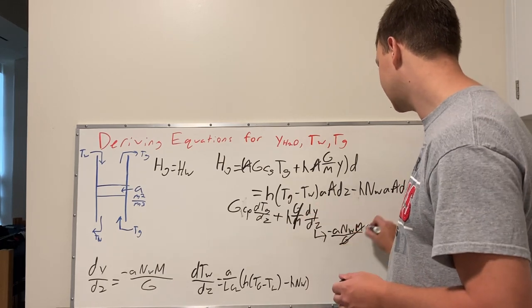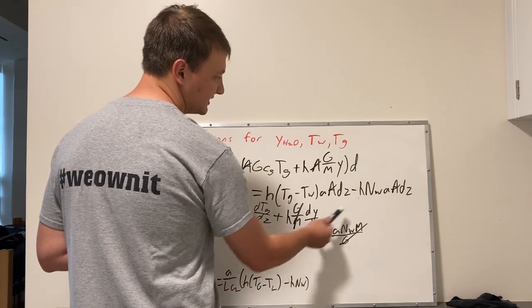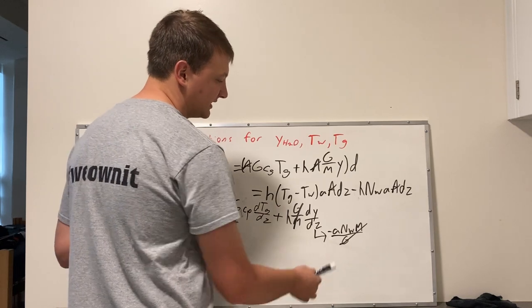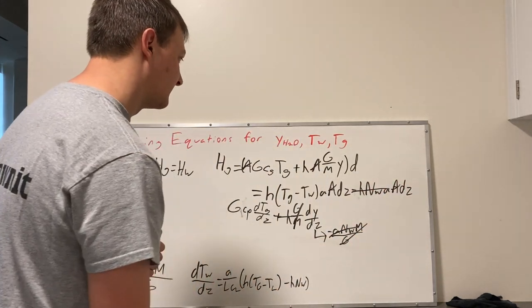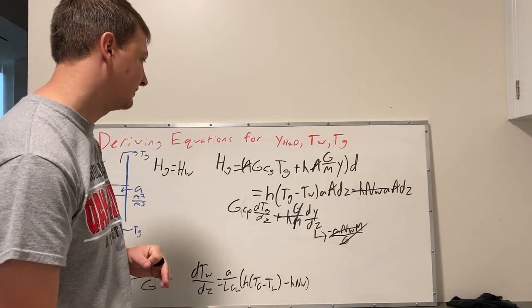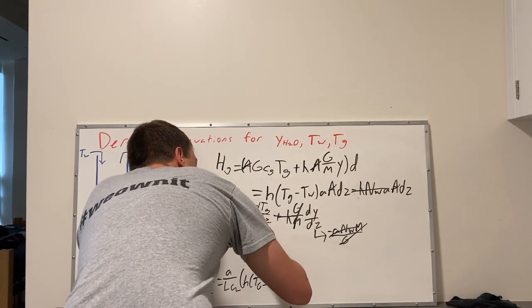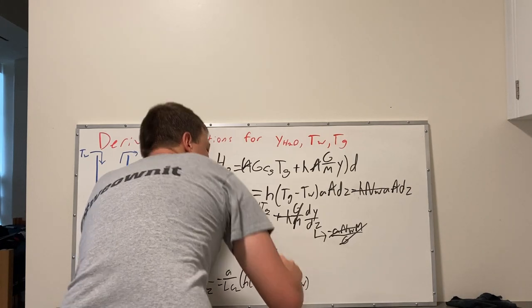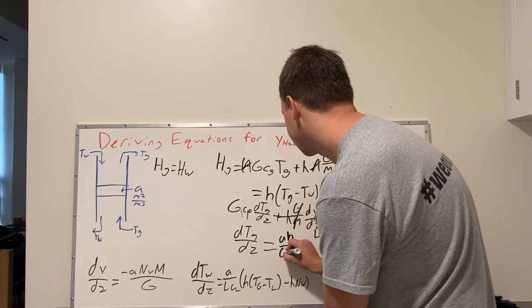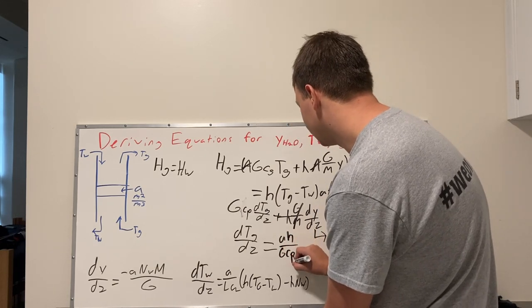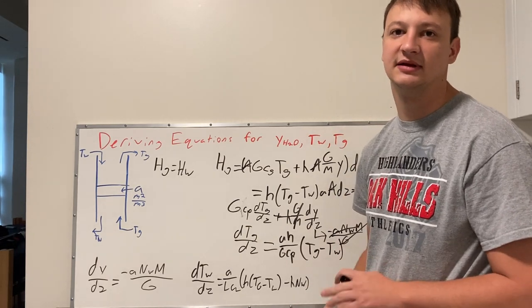Now we can start canceling out. The gas flow rate terms cancel, and on both sides of the equation we have negative heat of vaporization, mass flux, and specific volume area — so those all cancel out. Moving the gas flow rate and heat capacity to the right side, we end up with the change in gas temperature over change in position equals the specific volume area times the heat transfer coefficient, divided by the gas flow rate times the heat capacity, multiplied by the temperature difference of the gas and the water. That's our last derived equation before coding.